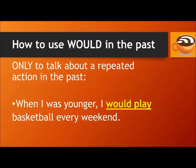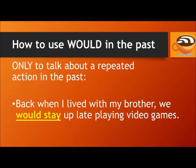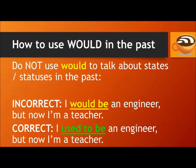The third way to talk about the past is by using 'would.' We can only use 'would' to talk about a repeated action in the past. For example: when I was younger, I would play basketball every weekend. Back when I lived with my brother, we would stay up late playing video games. Do not use 'would' to talk about states or statuses in the past. For example, don't say 'I would be an engineer, but now I'm a teacher' — that's incorrect, because being an engineer is a state, not an action. In this case, you need to use 'used to': I used to be an engineer, but now I'm a teacher.